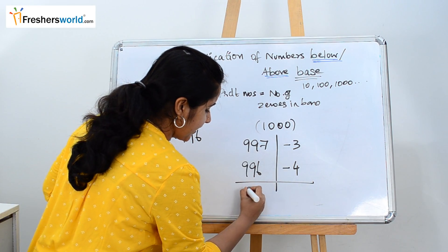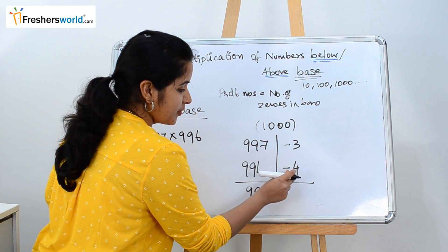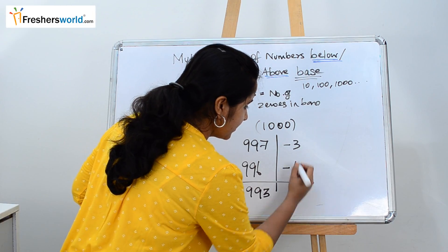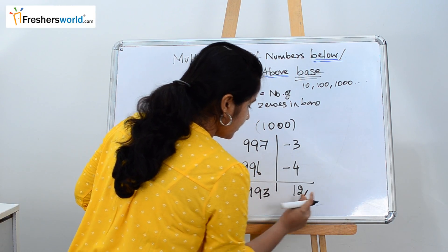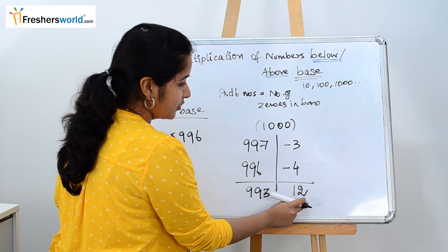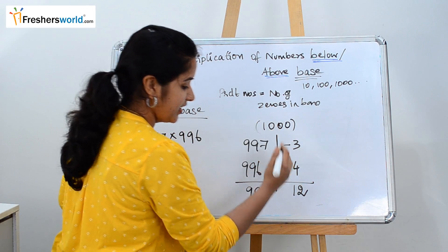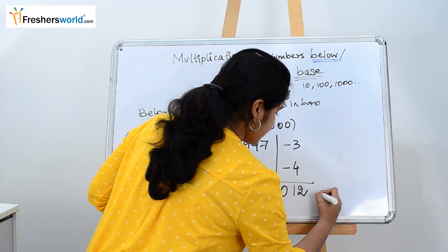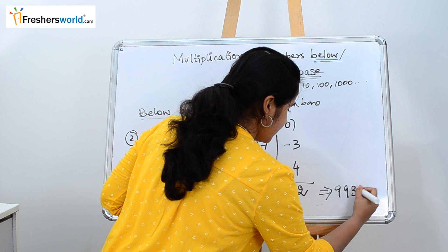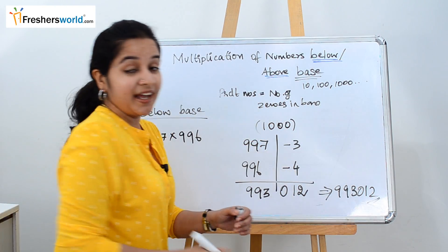Sum is 993. It is going to be the same as this. Then product here. 4 times 3 is 12. Now to check the number of digits. It's 2 digits here but the number of zeros here is 3. So put one more 0 here. So it's 993012. It is as simple as that.